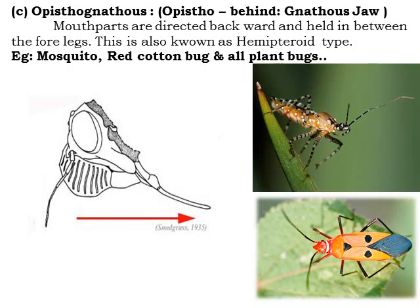The last type is opisthognathous — 'opistho' meaning behind. The mouth parts are always directed backward, heading between the first pair of legs. This is also known as the hemipteran type of head position. Good examples include mosquitoes, bed bugs, and plant bugs, where the mouthparts are directed backward toward the first pair of legs.